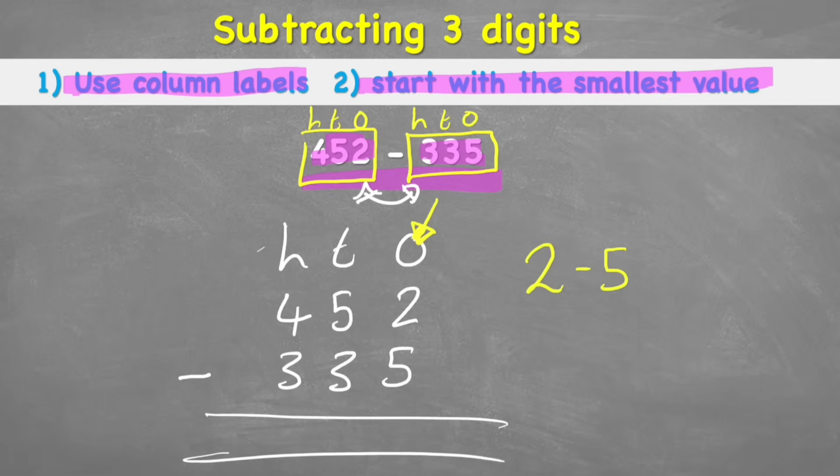So let's think about this very carefully. 2 subtract 5. If I have 2 apples, here are my beautiful apples, can I take away 5? Let's see. 1, 2, no. I can't take any more than 2 away because obviously I only have 2 in the first place.